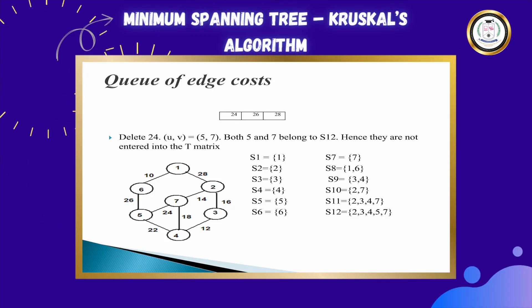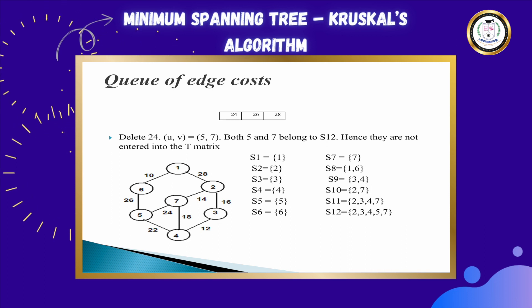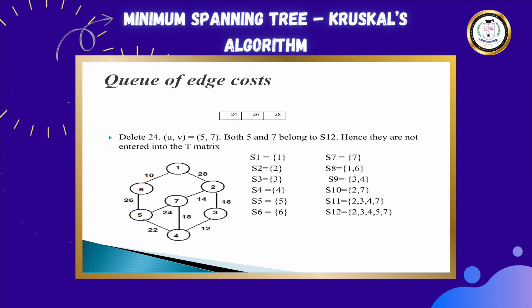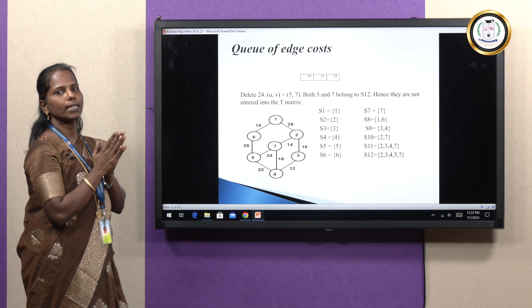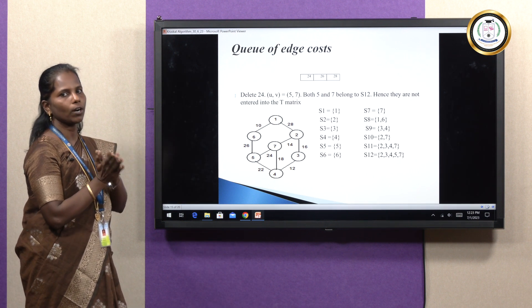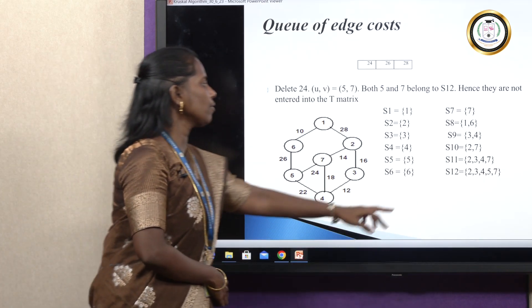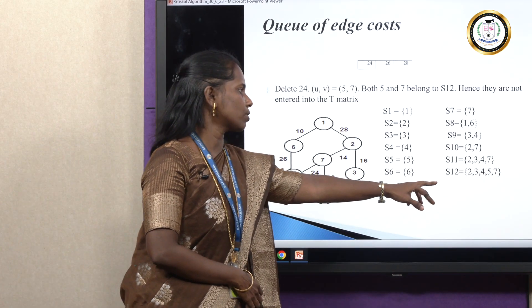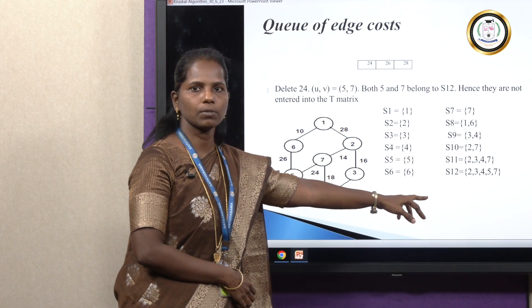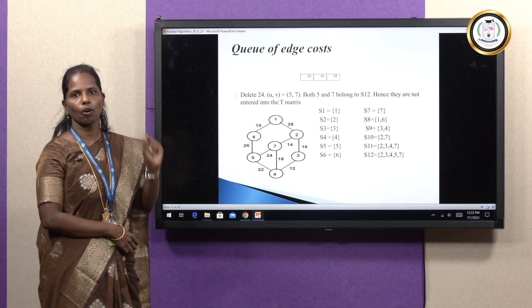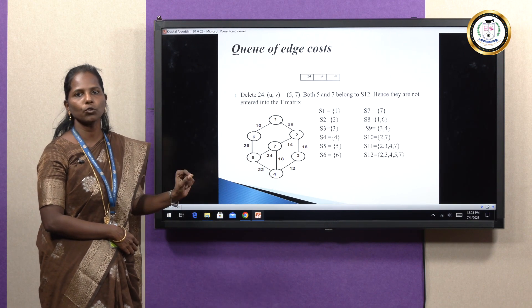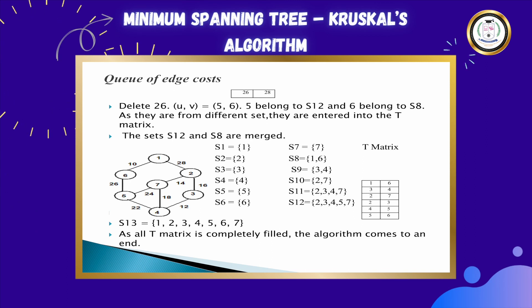Next, take edge cost 24. The nodes associated with 24 are 5 and 7. Check if 5 and 7 are in the same set or different sets. They are present in the same set S12. Since they are in the same set, they may form a cycle, so we should not include them in the T matrix. Move to the next iteration.